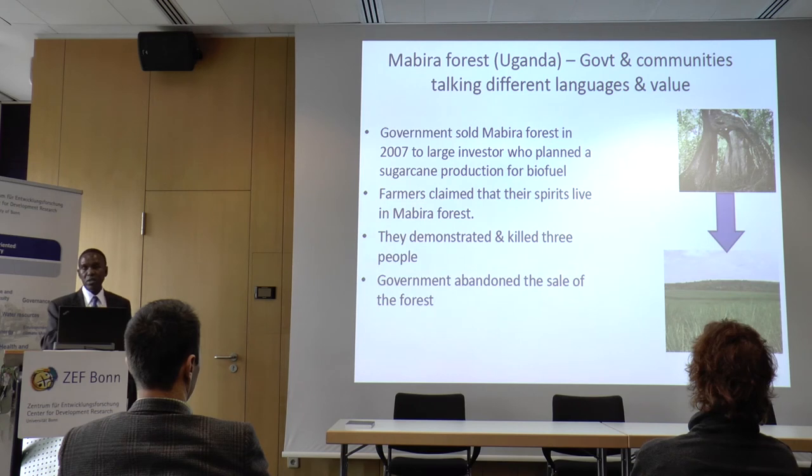In Uganda, the government tried to sell Mabira Forest to plant biofuel sugarcane. The communities said: 'Don't cut that forest — our spirits live there. If you cut it, they will be angry and we will have no rainfall.' Scientists tell the exact same story using different language: the forest maintains rainfall and provides ecosystem services. The farmers say 'spirits,' scientists say 'ecosystem services' — they are talking about the same thing, but the government had no idea about either the spiritual or ecosystem value.